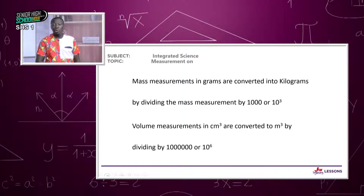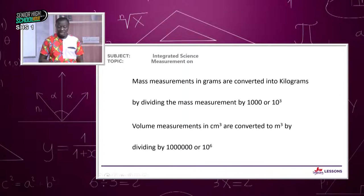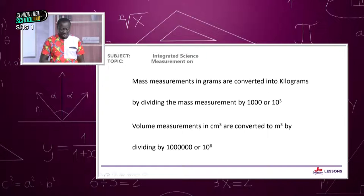Volume measurements in centimeters cubed are also converted to meter cubed. Most often the equipment we have helps us measure volumes in centimeters cubed, so we have to convert to meter cubed. We do so by dividing by a million, or 10 to the power 6, as shown on your screen.